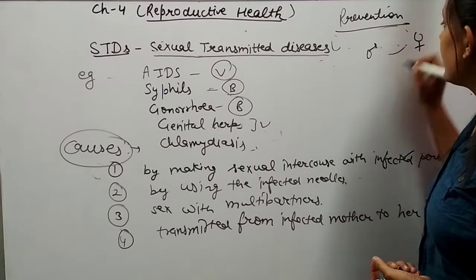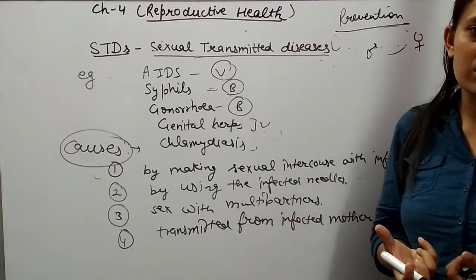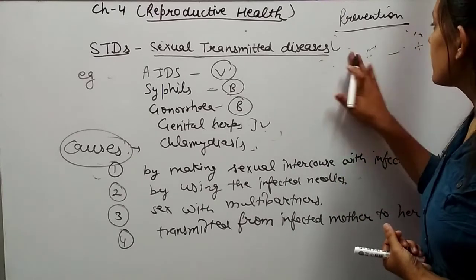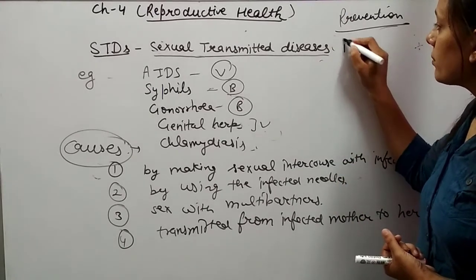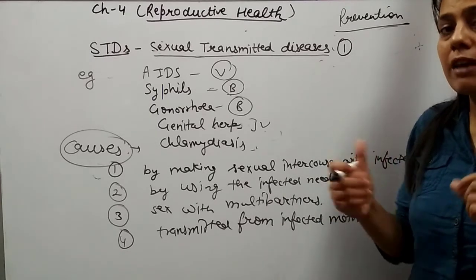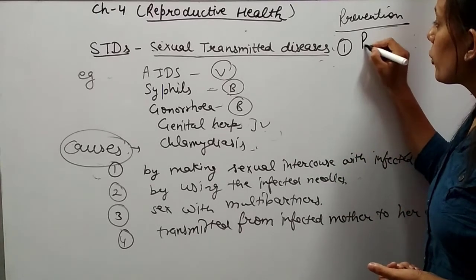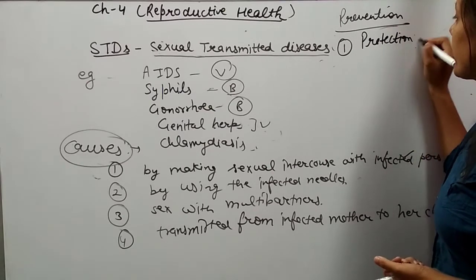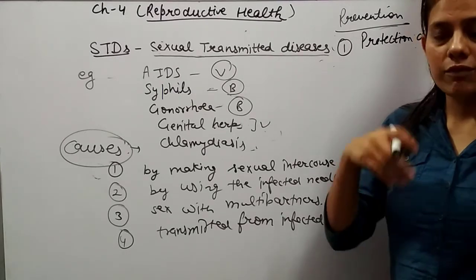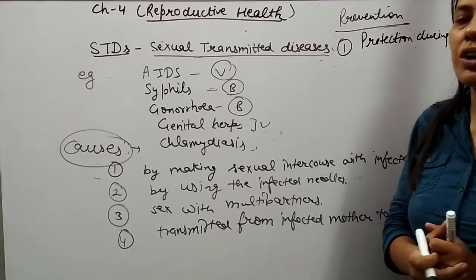If a male and female are having sexual intercourse, some mechanical barriers can be used — like condoms, cervical caps, and diaphragms. These barriers will prevent the injection of semen into the body of the female from the male body. Simply, you can note that by using protective measures — protection during sex — which prevent the transfer of fluid from one body to the other during sex.